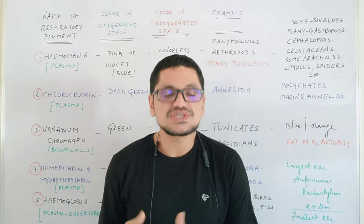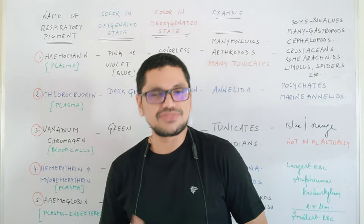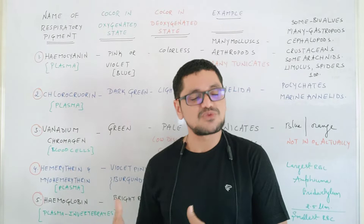That respiratory pigment may help in transport of gases, and generally may not help in transport of gases in some animals. If you observe the different types of respiratory pigments present in the animal kingdom, there are pigments like hemocyanin, hemerythrin, chlorocruorin, vanadium chromogen, and others — that is the reason why blood color can be blue, green, violet, or purple.